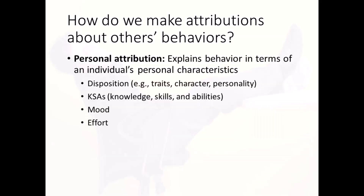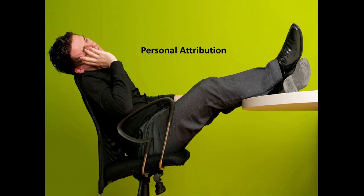Let's take a closer look at personal and situational attributions. A personal attribution explains the target's behavior in terms of their internal characteristics. Among many things, this includes their disposition, traits, character, and personality, as well as their knowledge, skills, and abilities. When someone is late, you may blame them and assume they are lazy or irresponsible.